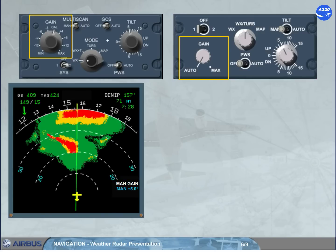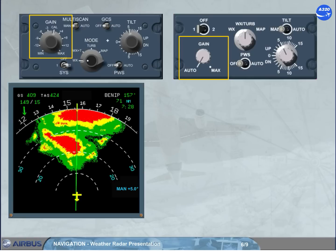In the auto position, or in the calibration (CAL) position, the radar adjusts automatically the gain to the optimum calibrated setting.